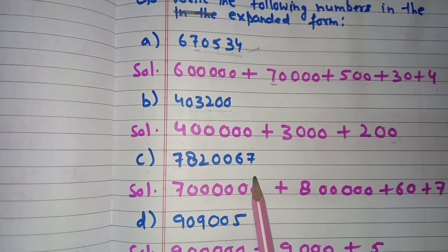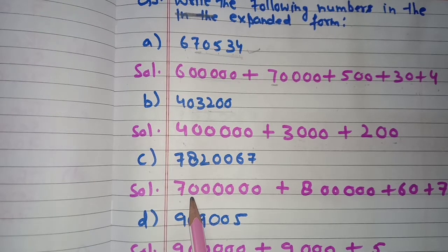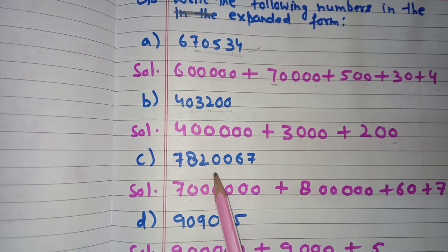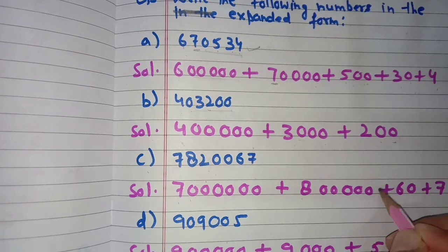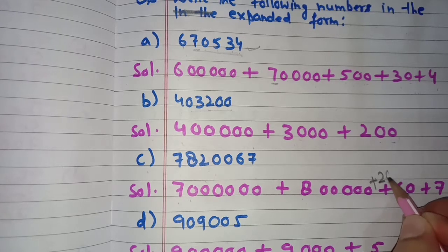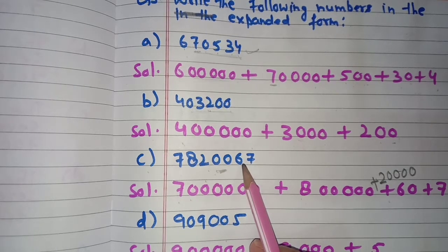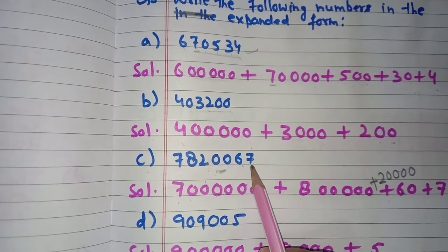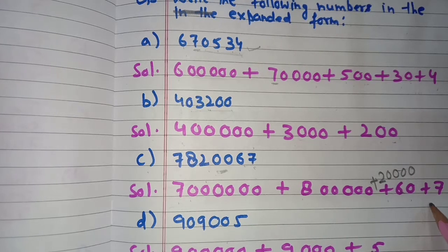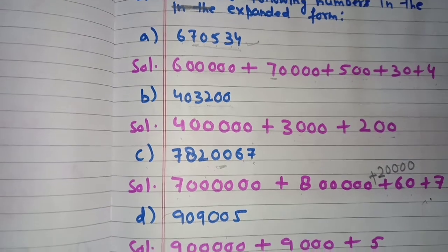Part C is 78,20,067. The place value of 7 is 70,00,000 (seventy lakh), place value of 8 is 8,00,000 (eight lakh), zeros are skipped, place value of 2 is 20,000 (twenty thousand), place value of 6 is 60 (sixty) since there is one digit after it, and place value of last 7 is 7. So the expanded form is: 70,00,000 + 8,00,000 + 20,000 + 60 + 7.